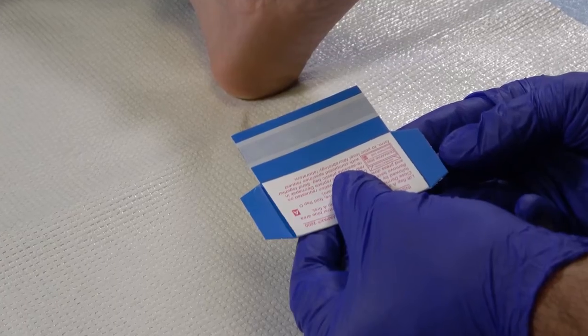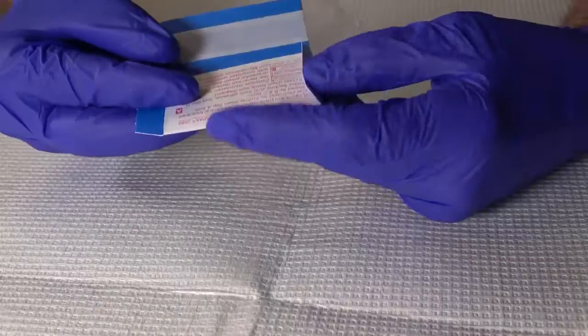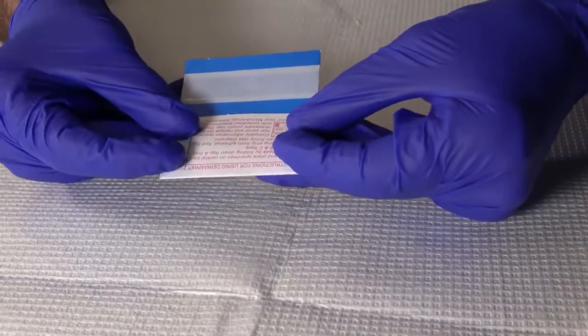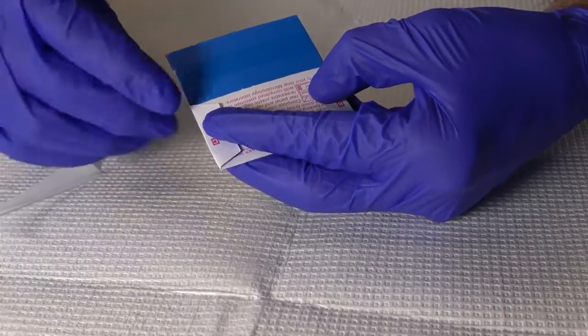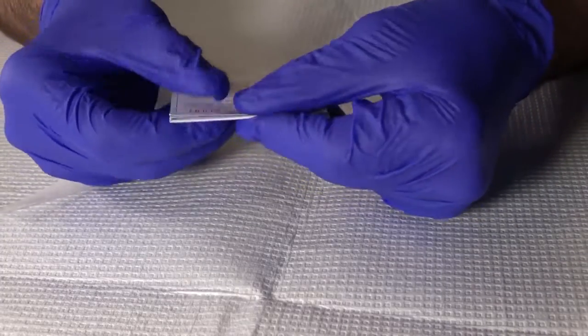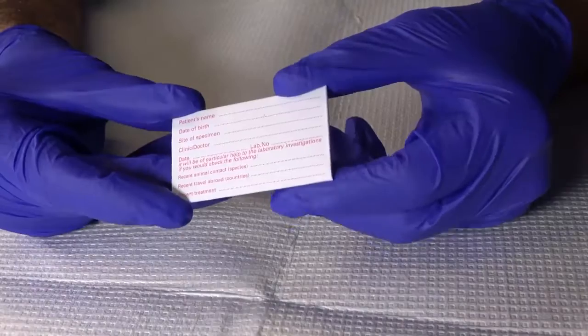Next, fold the B and C side flaps. Remove the paper covering the adhesive strip and fold flap D down and press firmly to ensure adhesion and closure.